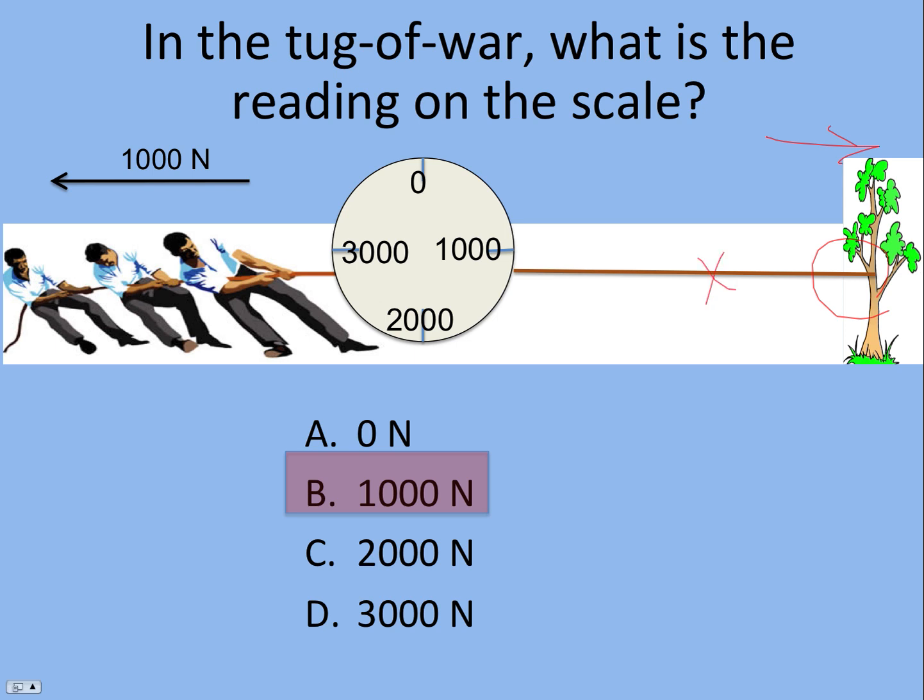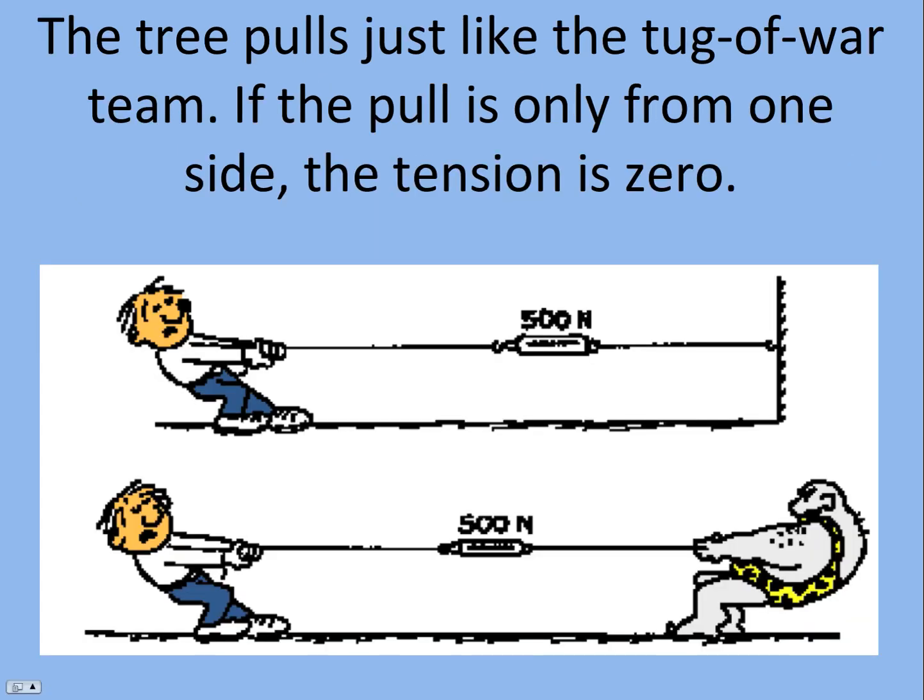But there's no difference. If I don't have the rope tied to the tree and the accountants pull, they just drag the Newton scale along the ground. They might show a little bit of tension just because it's bumping against the ground, but it would be zero tension.